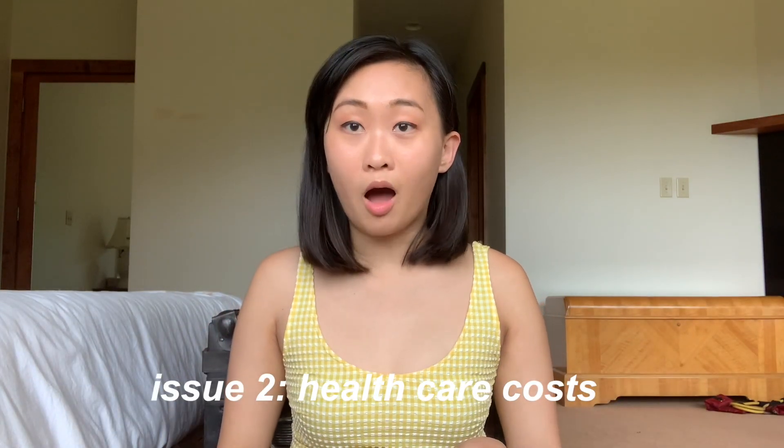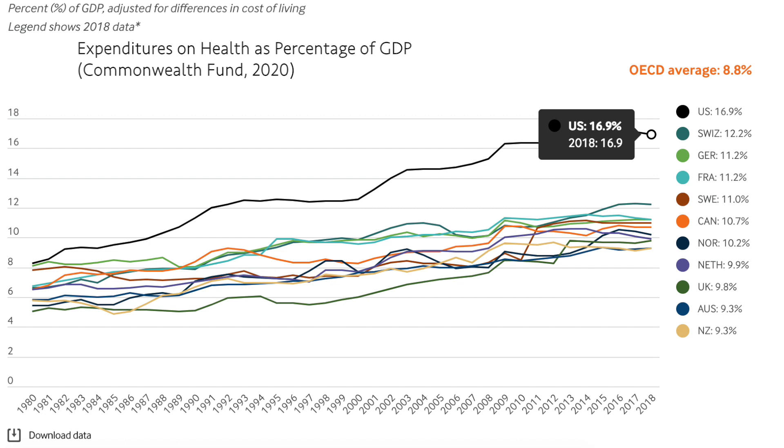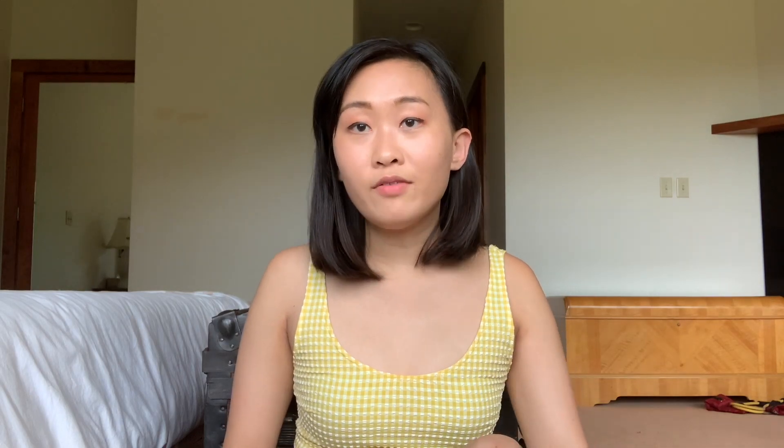The second major problem in the U.S. health care system is cost. In 2018, the U.S. spent 16.9% of gross domestic product on health care — almost two times more than the average of OECD countries. Costs are high partly because private health insurance companies are poor at negotiating prices. Unlike other countries, the U.S. government doesn't fix the price of drugs, tests, or services. Instead, payers negotiate with hospitals and providers, but since there are so many private insurers each covering a small subset of the population, they don't have much bargaining power.